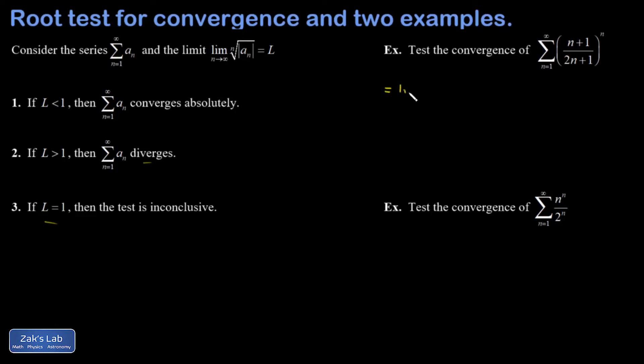Now, let's apply the root test to our first series. I'm going to take the limit as n goes to infinity. I don't even have to worry about absolute values here because there are no negative terms. And I'm going to have the nth root of (n+1)/(2n+1) to the n. So the nth root is the same as an exponent of 1 over n. I multiply the exponents and the nth root has undone the exponent of n.